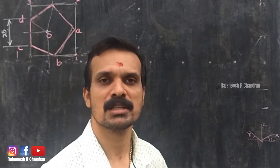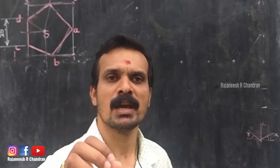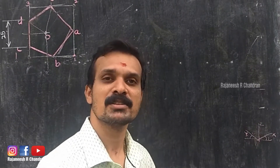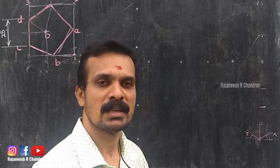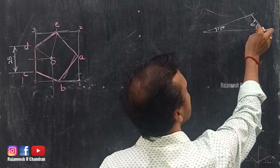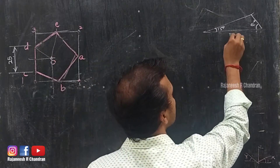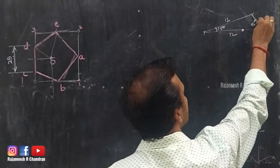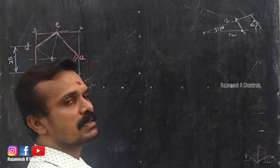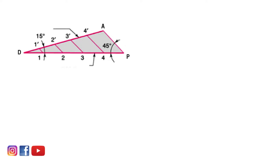How can we draw the corresponding isometric projection from the orthographic view? First we have to construct an isometric scale. How can we construct the isometric scale? We have explained in the previous video in the introduction to isometric view. With the help of that we can draw the isometric scale. This is 15 degrees, this is 45 degrees — that is the isometric scale. This is the true length and this is the isometric length. If we have to convert a distance to isometric scale, take that distance and draw a line parallel to this line, so that we obtain the isometric length. You can see the isometric scale on your screen right now.